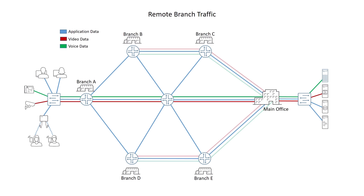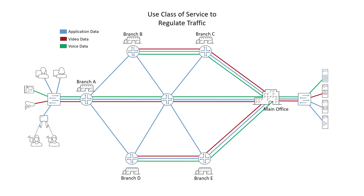I wanted to present this scenario because I ran into a situation where a company had a central office and a few hundred remote branches. They were relaying voice, data, and video security feeds from the remote sites to the corporate office, and found that when certain application updates were occurring, their voice quality suffered and at times became unusable. They were able to address this issue at each branch for outgoing traffic simply by configuring quality of service or class of service on their provider-facing links, but the corporate office was more complex.